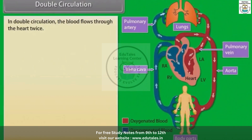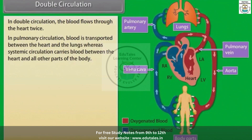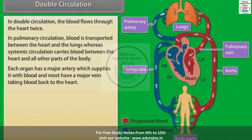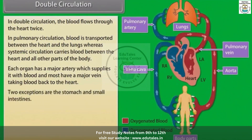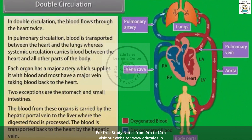In double circulation, the blood flows through the heart twice. In pulmonary circulation, blood is transported between the heart and the lungs. In systemic circulation, blood is carried between the heart and all other parts of the body. Each organ has a major artery supplying it with blood and most have a major vein taking blood back to the heart. Two exceptions are the stomach and small intestines — blood from these organs is carried by the hepatic portal vein to the liver where digested food is processed, and transported back to the heart by the hepatic vein.